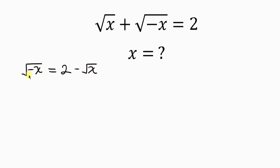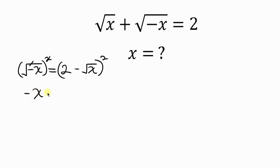In order to get rid of this square root, our next step will be to take the square of both sides. So we square the left and also square the right. Notice that the square cancels out the square root, leaving behind negative x, equal to 2 minus the square root of x, all squared.